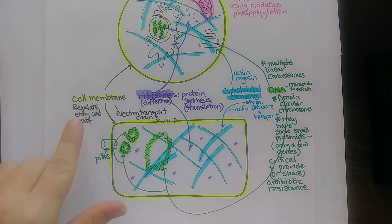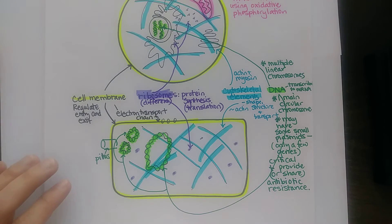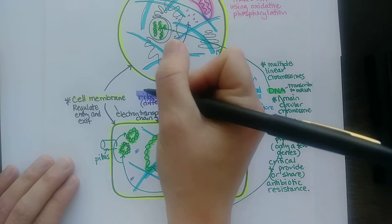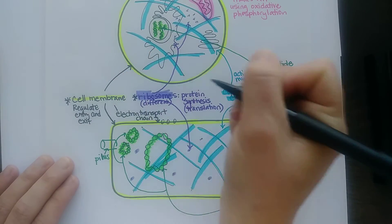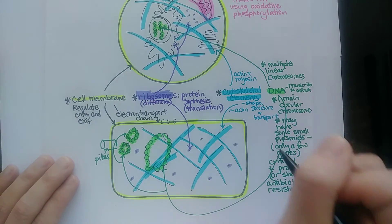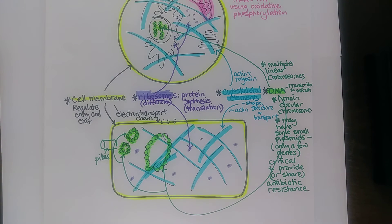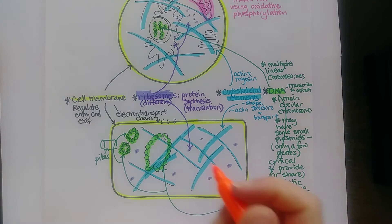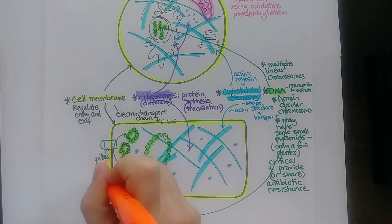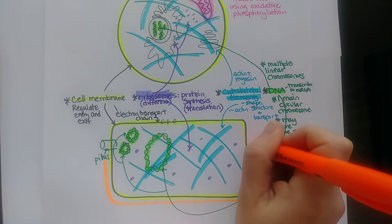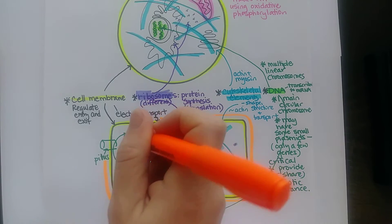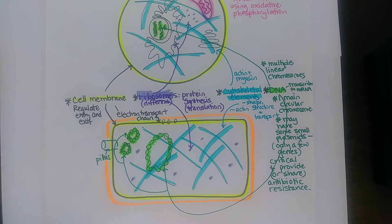So these are the only things that are shared: they've both got cell membranes, they've both got ribosomes, they've both got cytoskeletal elements, and they've both got DNA. Now the next thing I'm going to mention is the cell wall. The cell wall is going to be found in all prokaryotes, but it's not found in all eukaryotes, so we're going to discuss it in a slightly separate spot.